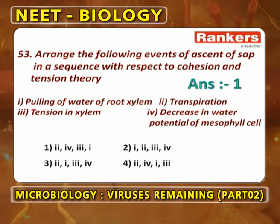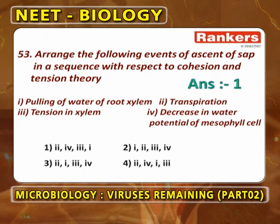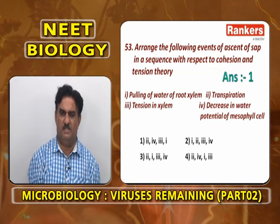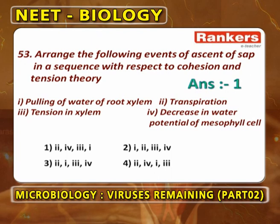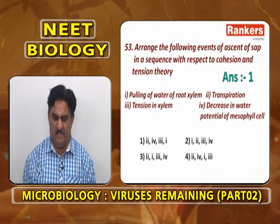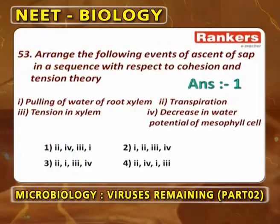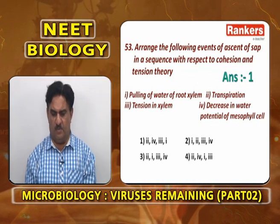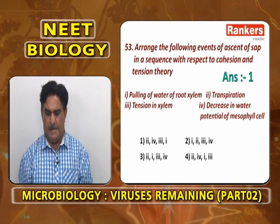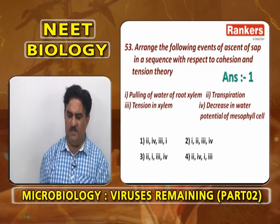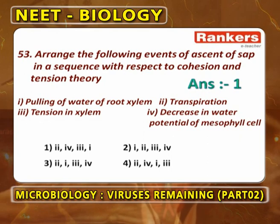Arrange the following events of ascent of sap in sequence with respect to cohesion tension theory, proposed by Dixon: transpiration is responsible. Once transpiration takes place, water potential decreases in mesophyll cells. The sequence is: first transpiration, then decrease in water potential of mesophyll cells, then tension in xylem, finally pulling of water — root pressure of root xylem. Answer is 2, 4, 3, 1 as the correct sequence.